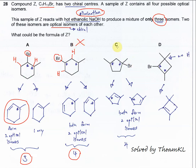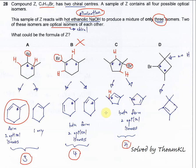For option C, elimination will occur from this bromine and this hydrogen to form one product, and this bromine can also be removed with this hydrogen to form another product. Both products have one chiral center each — confirmed by having one hydrogen and three different groups — so each forms two optical isomers. Total is four, so option C is also not the answer.